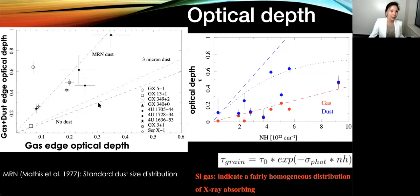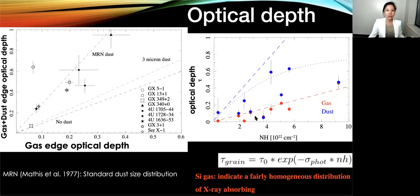From these sources, we can get the gas edge optical depths as well as the total edge optical depths including gas plus dust. For most of the sources, they are consistent with the standard dust size distribution. In the figure, I plot the optical depths as a function of hydrogen column density. The red dots are the gas optical depths and the blue are the dust optical depths. The gas optical depths linearly correlate with hydrogen column density, but for the dust they do not. This blue dotted curve can be expressed in a formula. This result tells us the silicon gas is fairly homogeneous in different directions, and the dust is not.